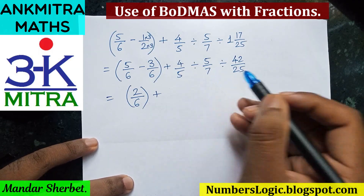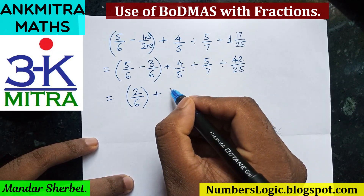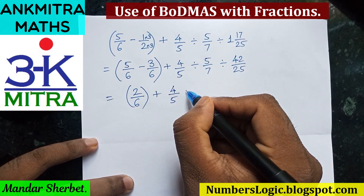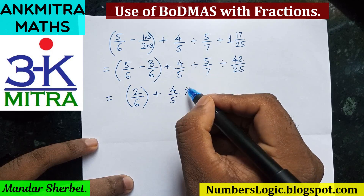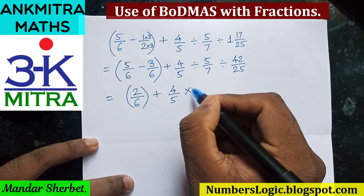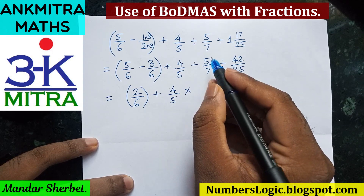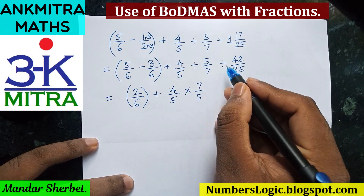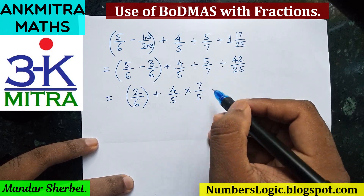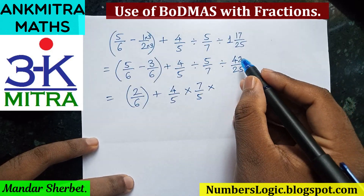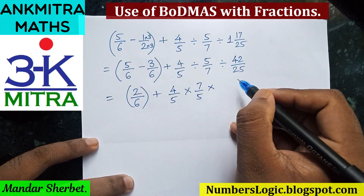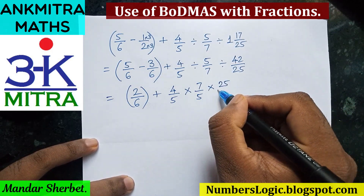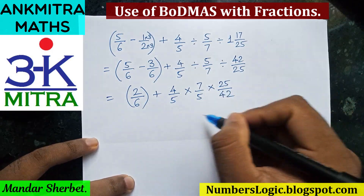We write down the first fraction as it is: four upon five. We replace the division sign with a multiplication sign, and the fraction after it is written in reciprocal form, so five upon seven becomes seven upon five. Similarly, the next division sign is replaced with multiplication, and 42 upon 25 becomes 25 upon 42.